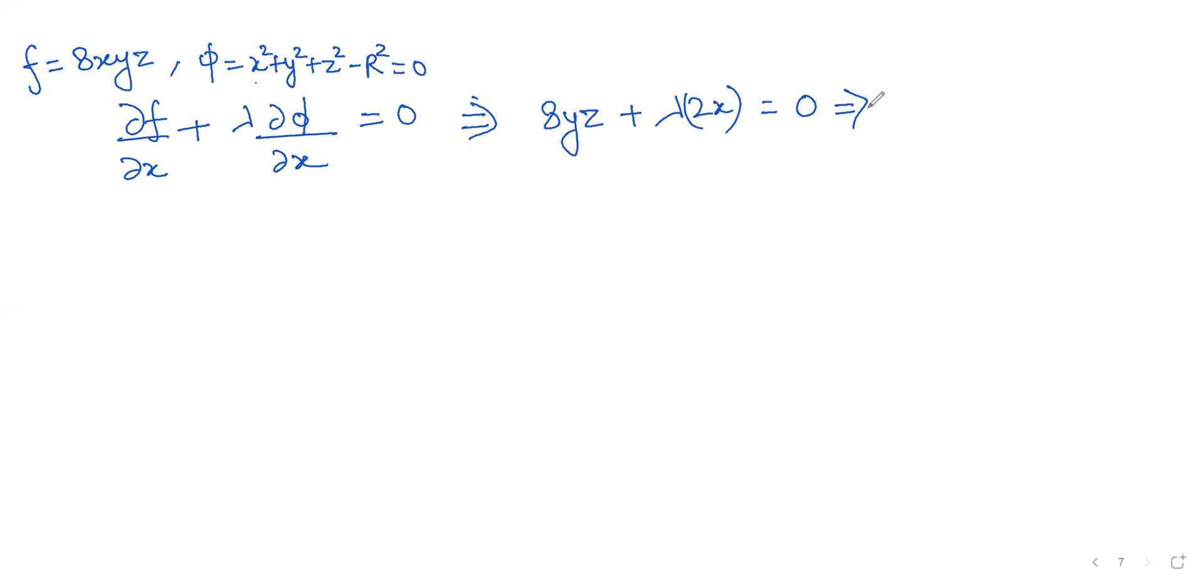Now we have ∂f/∂y + λ∂φ/∂y = 0. So 8xz + λ(2y) = 0. That means 2λy = -8xz.